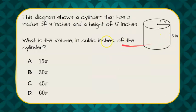Here's our question. The diagram shows a cylinder that has a radius of three inches and a height of five inches. What is the volume in cubic inches of the cylinder?